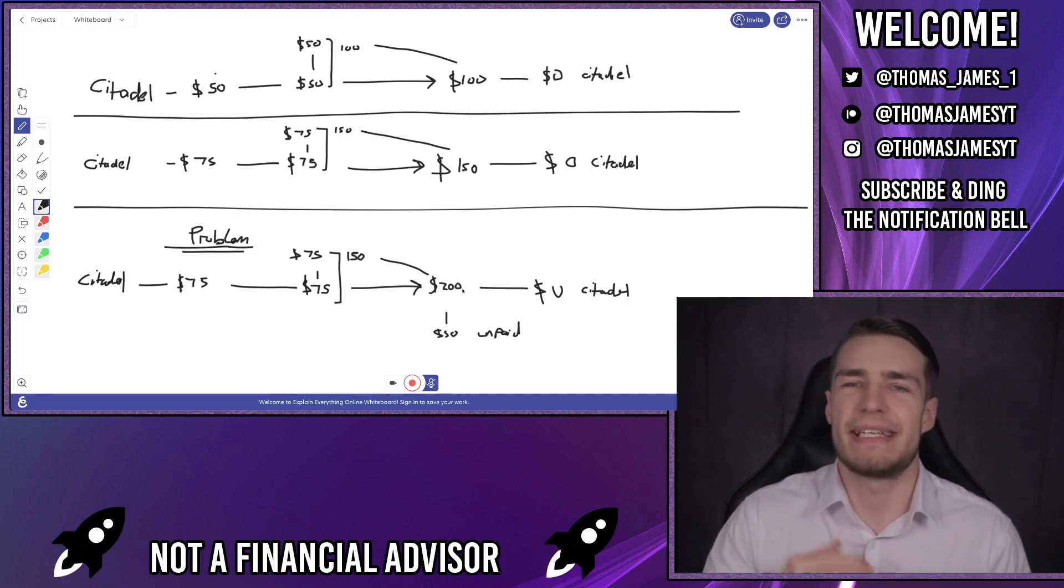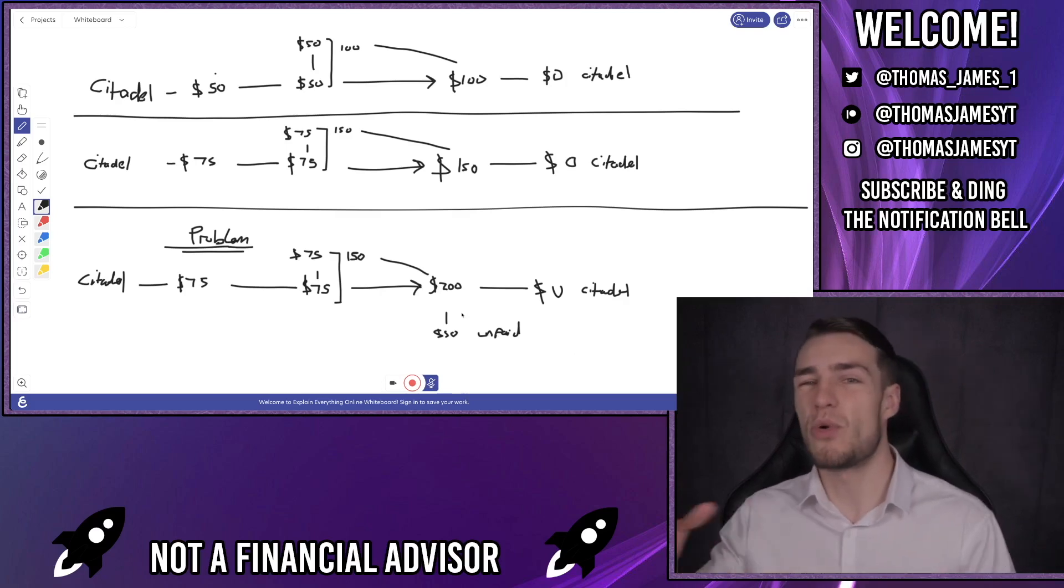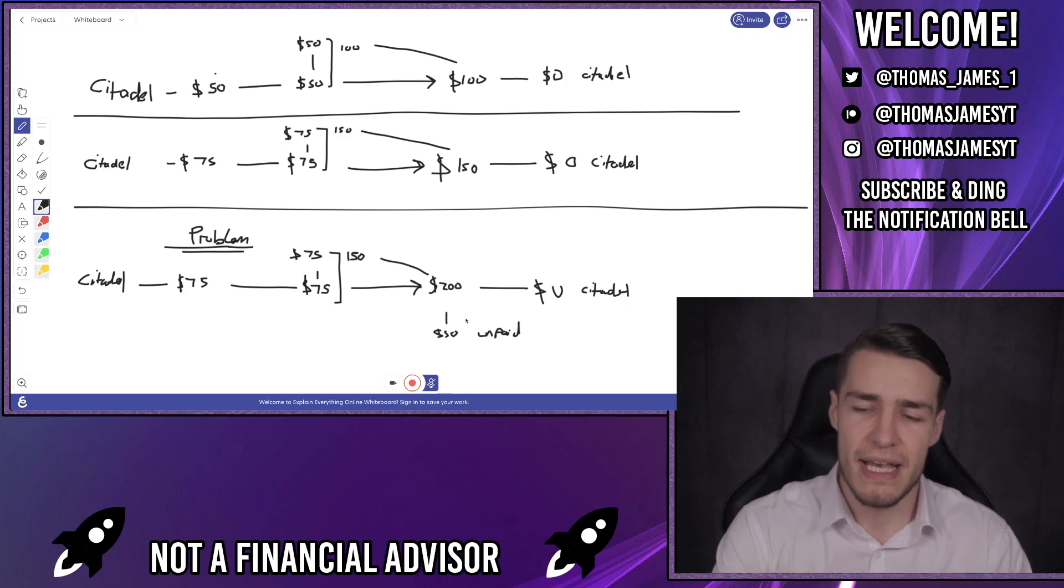Now this is where DTCC 2021-010 comes into place. Obviously you've got the SFTs and the security financing transactions. So Citadel can sell some of their other long positions to cover that $50 unpaid amount. But again what happens if their entire portfolio is liquidated? This is where that $50 unpaid amount is shared between all of the members in the DTCC or all of the members in the SFTs. That $50 is shared between all of the US banks.